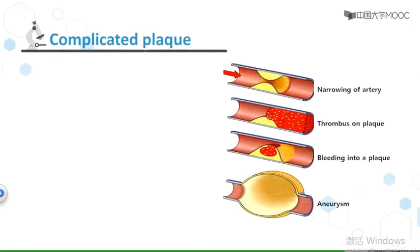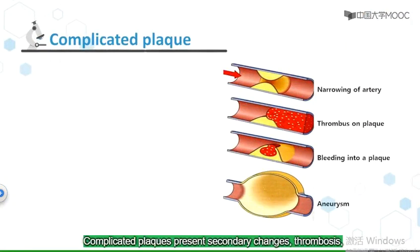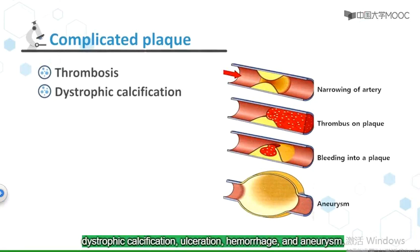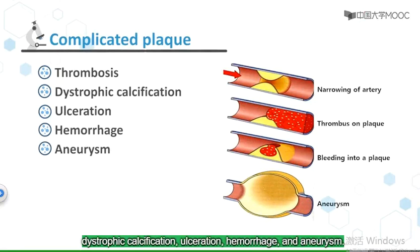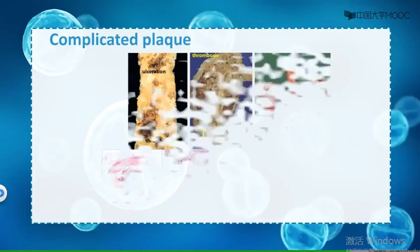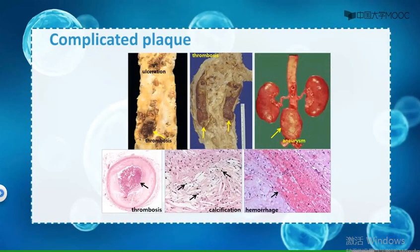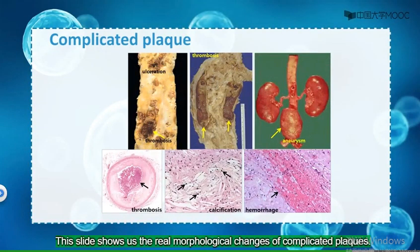Complicated plaques present secondary changes including thrombosis, dystrophic calcification, ulceration, hemorrhage, and aneurysm. This slide shows us the real morphological changes of complicated plaques.